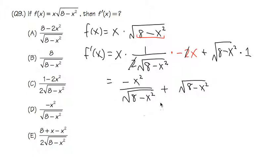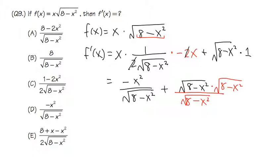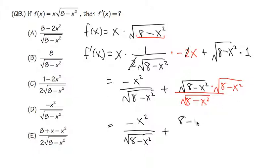This is not one of the answer choices yet because we need to combine the fractions. We need a common denominator, which is the square root of 8 minus x squared. So I multiply the second term by that square root on both the top and bottom. For the second term's numerator, since the square roots of the same quantity cancel, I get 8 minus x squared on top.